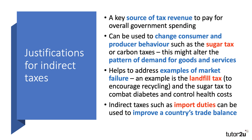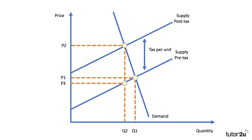At a macro level, indirect taxes are sometimes used to meet macroeconomic objectives. Governments might decide to bring into play protectionist policies such as an import duty, designed to make imports relatively more expensive and to perhaps improve a country's net trade balance. Tax revenue is a really key part of the argument, so let's quickly look at where a government can use indirect taxes to generate more revenue.